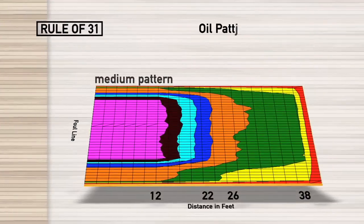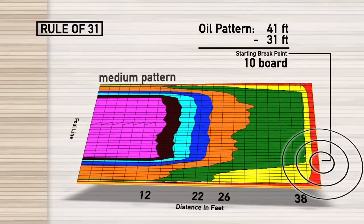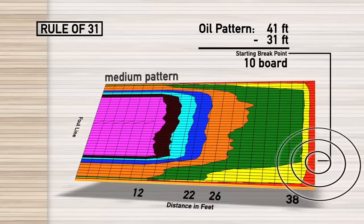Your break point is going to be somewhere about five boards left to where it was on the 36 foot pattern. So in the 8 through 12 range. And overall, you're going to use balls that probably have a little less cover.